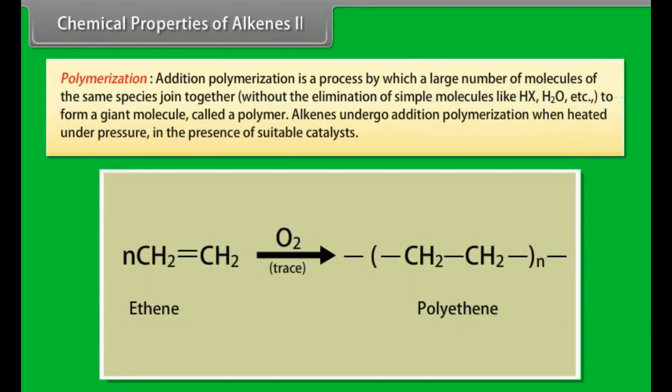Polymerization. Addition polymerization is a process by which a large number of molecules of the same species join together without the elimination of simple molecules like HX, H2O, etc., to form a giant molecule called a polymer. Alkenes undergo addition polymerization when heated under pressure in the presence of suitable catalysts. When ethene is heated to 1000 degrees centigrade under 1000 atmospheric pressure in presence of oxygen, we get polyethene.